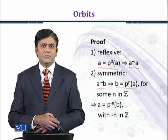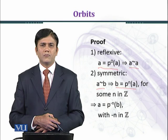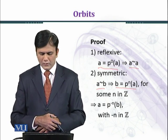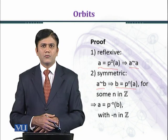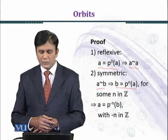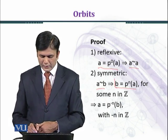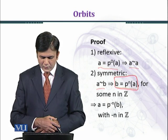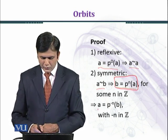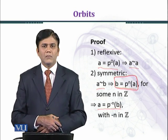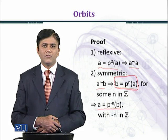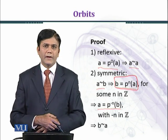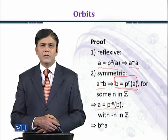Since a permutation is a bijective map it is invertible, as established in previous modules. So we can apply P raised to power minus n on both sides of the equation B equal to P^n(A). When we apply P raised to power minus n we shall get A equal to P raised to power minus n times B, with minus n belonging to the set of integers. So we have proved that B is related to A, and therefore the symmetric property is satisfied.